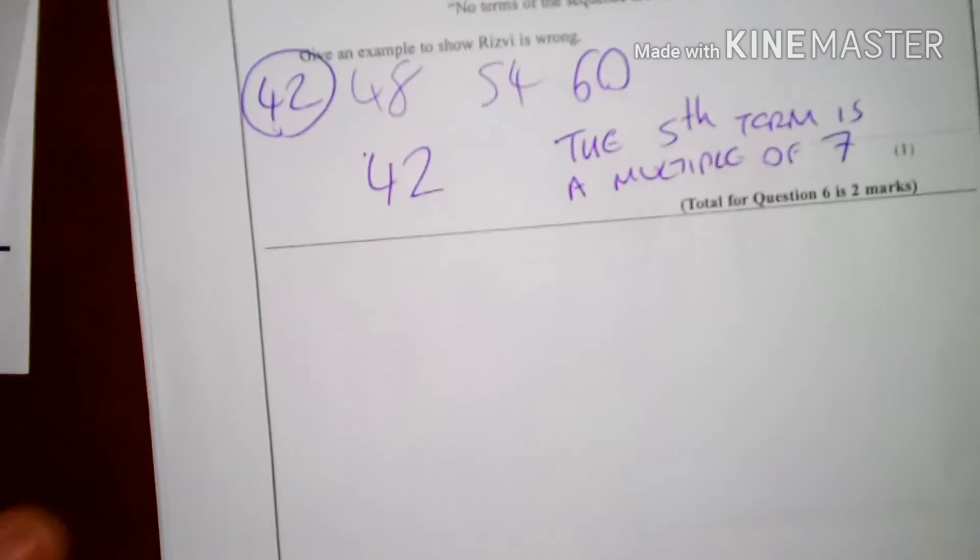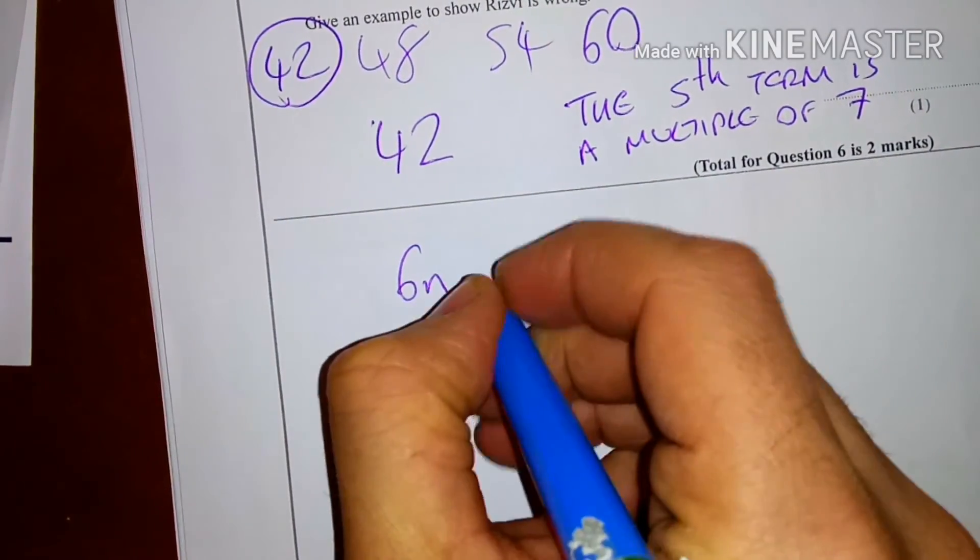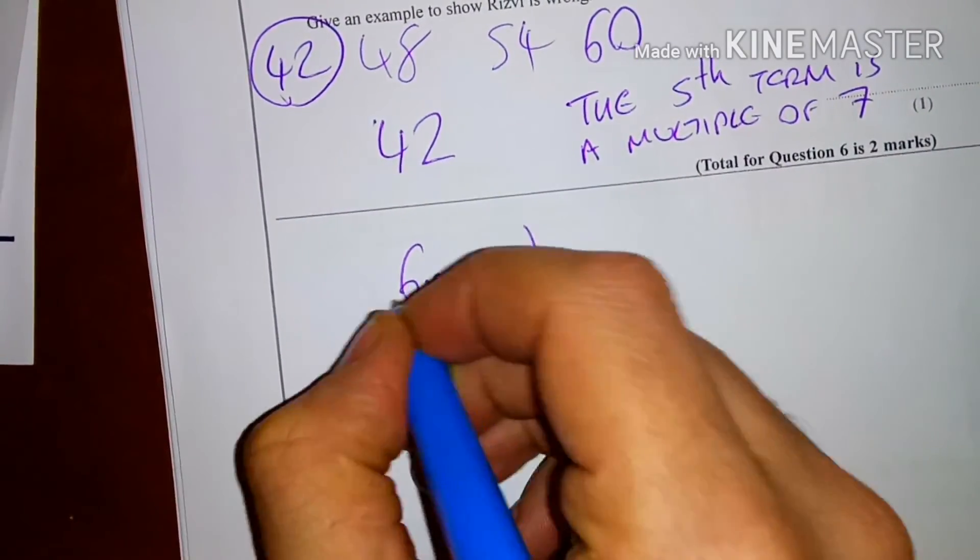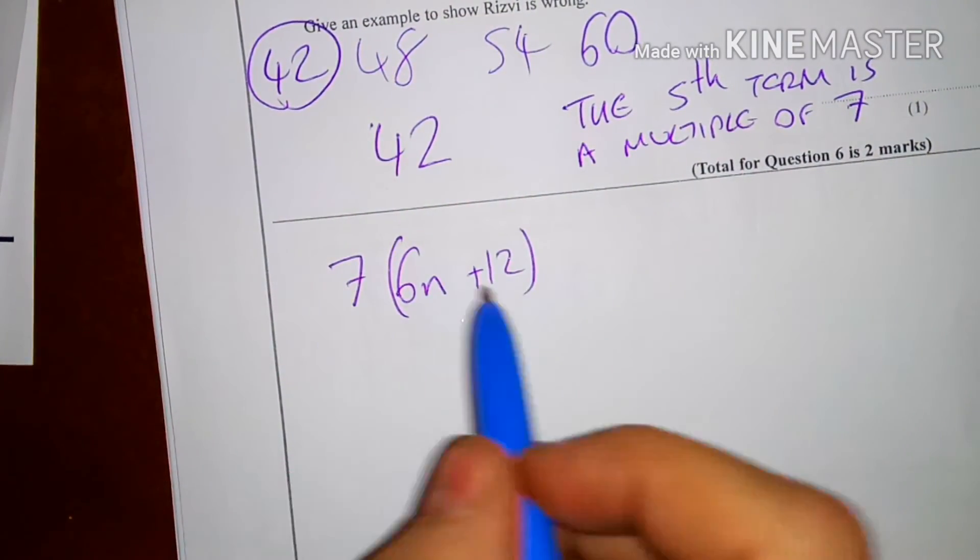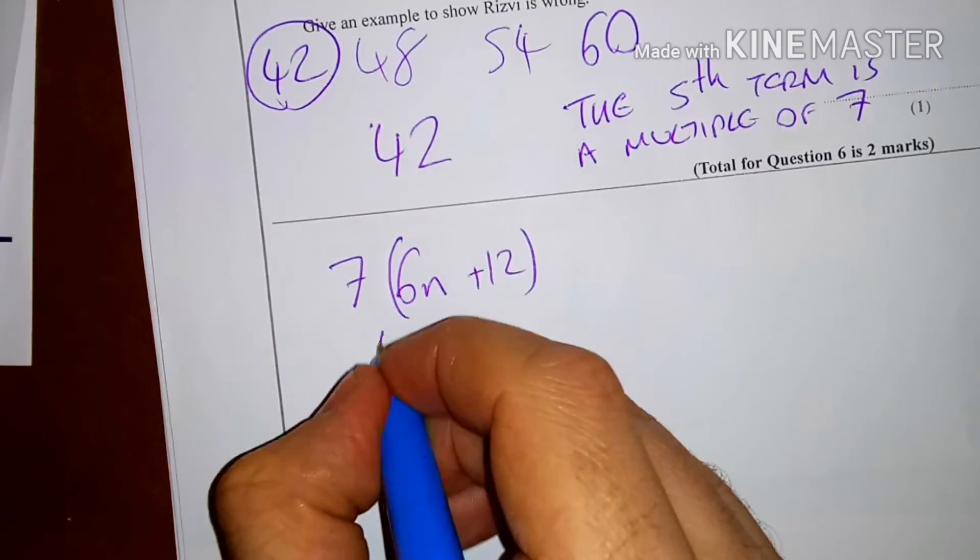Now, if you really wanted to be smart, what we could do is write a sequence, which is 6n plus 12. Now, if it's a multiple of 7, I could just times it by 7. Okay. Let's expand this. 7 times 6 is 42.